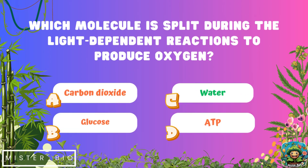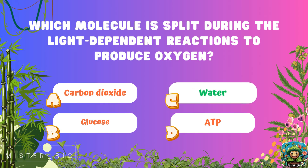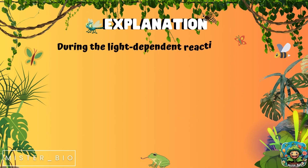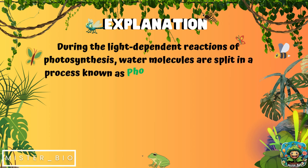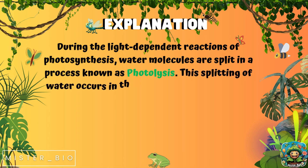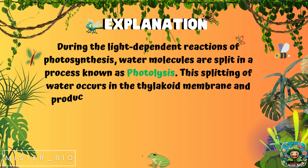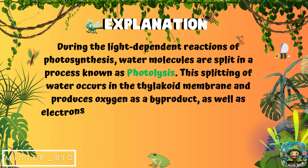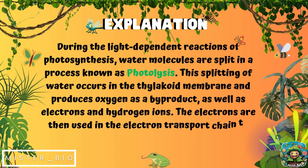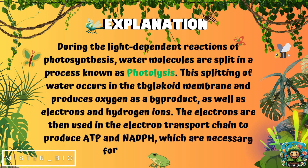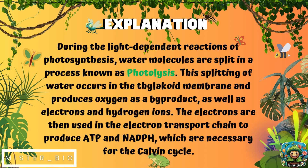The correct answer is C, water. During the light-dependent reactions of photosynthesis, water molecules are split in a process known as photolysis. This splitting of water occurs in the thylakoid membrane and produces oxygen as a byproduct, as well as electrons and hydrogen ions. The electrons are then used in the electron transport chain to produce ATP and NADPH, which are necessary for the Calvin cycle.